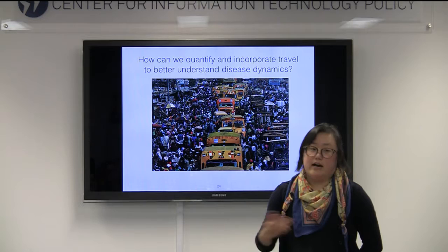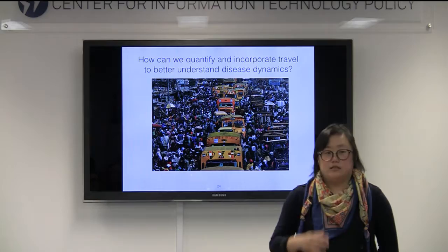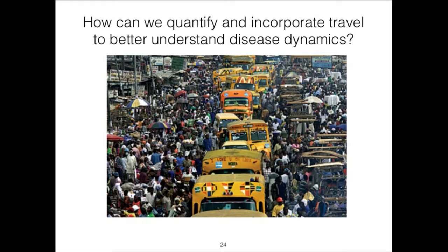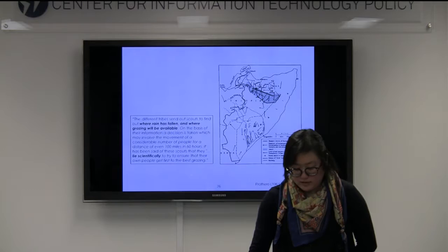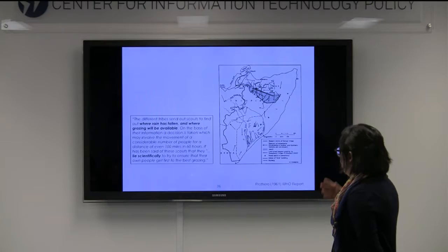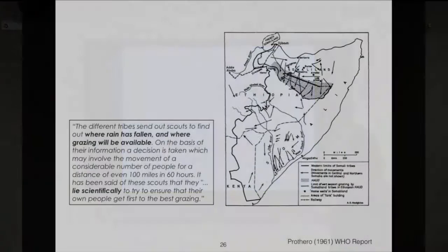What I'm really interested in is how can we actually quantify this, and how can we do this particularly in low-income settings. Places like the US might have a census or commuting-to-work surveys we could use to infer how many people are traveling between different airports, but that's much less common in other parts of the world. Lots of people have done studies throughout history looking at how people were traveling and how that might be related to diseases.